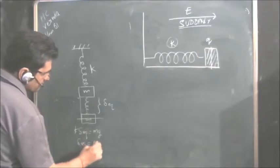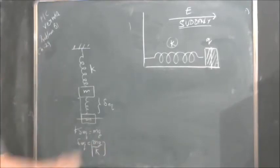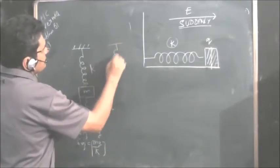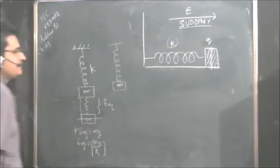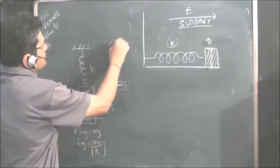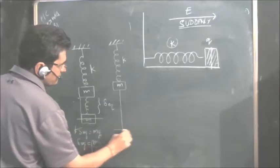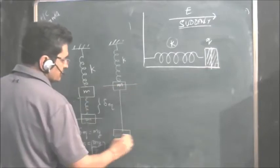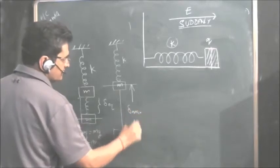At equilibrium, K times Delta equilibrium equals Mg. But when you release the mass suddenly, the situation is different. Please read the question very carefully when such a scenario is mentioned. When released suddenly, you have to apply the energy equation.